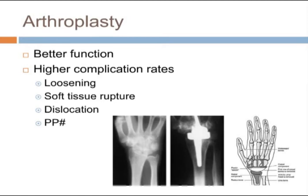Wrist arthroplasty is preferred by patients because it preserves function; however, it carries much higher complication rates. Complications include loosening of components, soft tissue ruptures over the prosthesis — whether due to the prosthesis itself or progression of disease activity — dislocation of the prosthesis, and periprosthetic fractures. The complication rate is still considered unreasonably high in rheumatoid wrist disease.